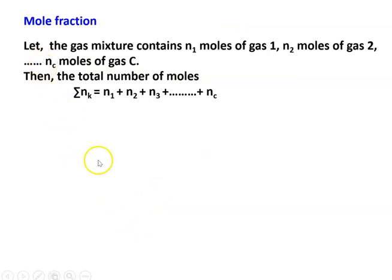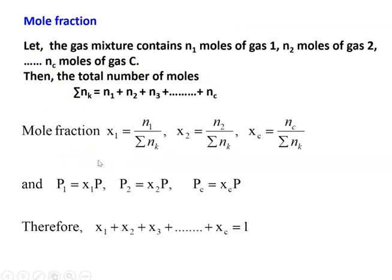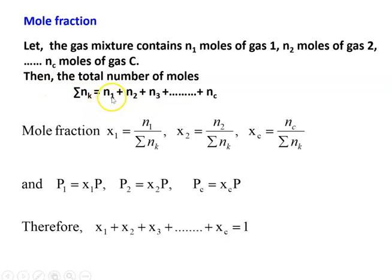Next, mole fraction. Suppose you have N moles. The gas mixture contains N1 moles of gas 1, N2 moles of gas 2, and Nc moles of gas C. The total number of moles is N = N1 + N2 + N3 + ... + Nc. We define the mole fraction as N1 divided by the sum of all Nk.